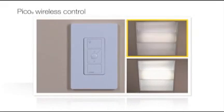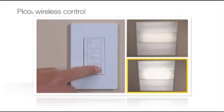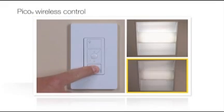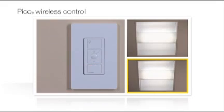If that fixture should be controlled by the Pico you're working with, tap OFF to move to the next fixture. When all fixtures have been properly grouped with the Pico, press and hold the OFF button on the Pico for 6 seconds. You have now successfully grouped fixtures to the Pico wireless control.